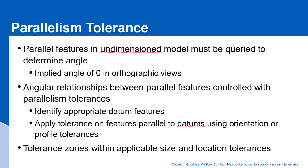Let's talk about parallelism tolerances. Parallel features in undimensioned models must be queried to determine the angle. We assume applied angles at zero in orthographic views. Angular relationships between parallel features are controlled with parallelism tolerances. They identify the appropriate datum features and apply tolerances on features parallel to datums using an orientation or profile tolerance, with tolerance zones within applicable size and location tolerances.